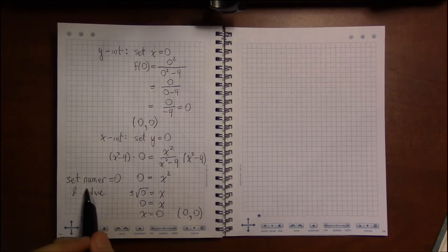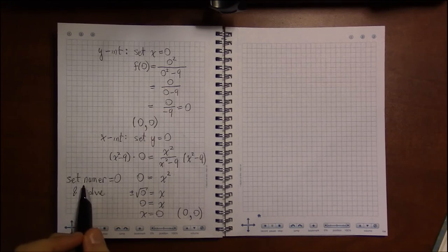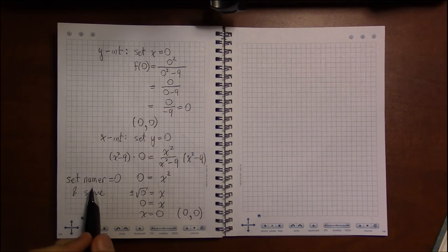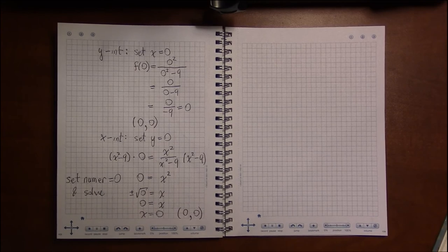We'll see in the next video that setting the denominator equal to 0 gives us the vertical asymptotes.